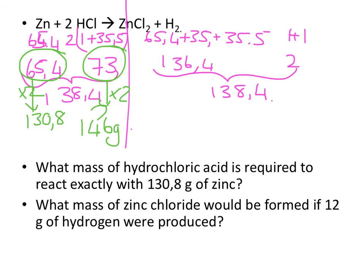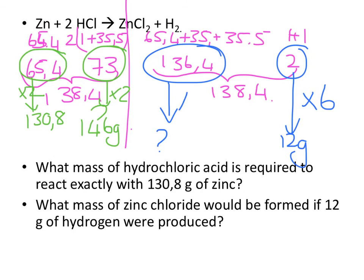What mass of zinc chloride would be formed if 12 grams of hydrogen were produced? To get from 2 grams to 12 grams, I've multiplied by 6, so I'm going to take 136.4, and I'm going to multiply that by 6, and I land up with 818.4 grams as my answer.